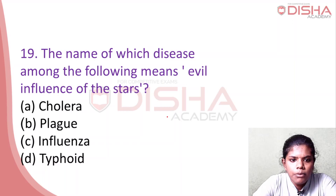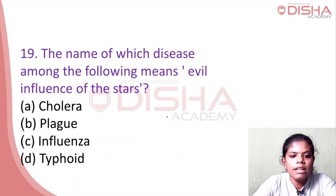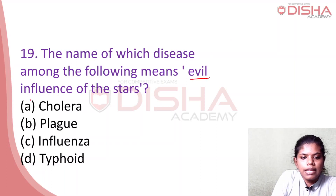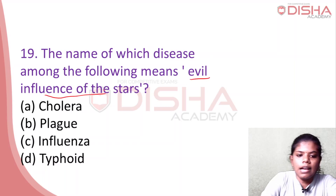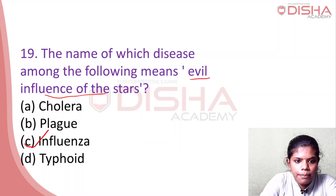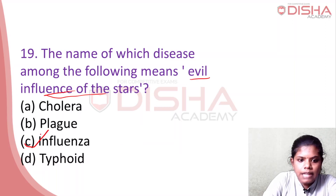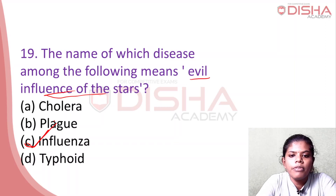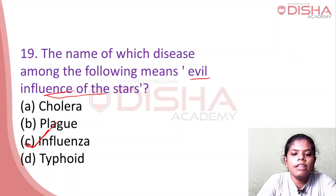The name of which disease among the following means evil influence of the stars? The answer is influenza — the name means evil influence of the stars.